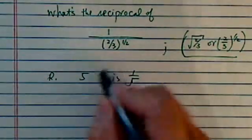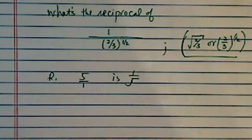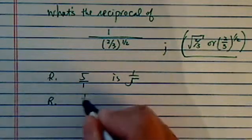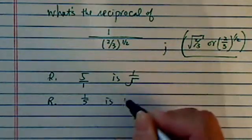So the reciprocal of 5 is 1 fifth. How do we get that? Well, 5 is really just 5 over 1. So the reciprocal of that is 1 goes on top, 5 goes on the bottom.